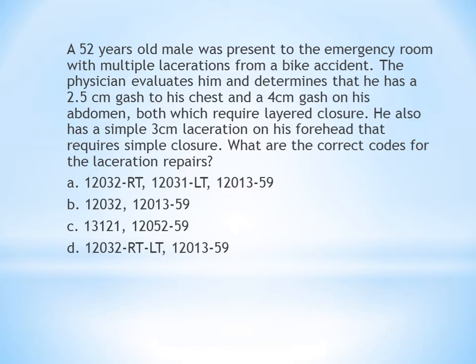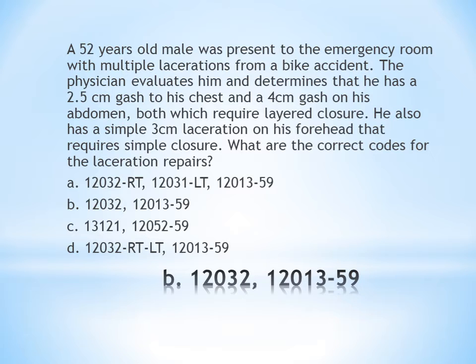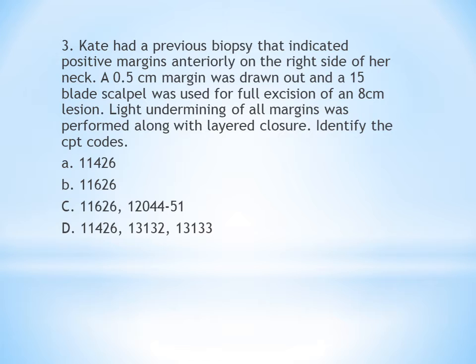Identify the body group and you will get the codes 12013 for simple repair and 12032 for intermediate repair. You have to put the more complicated one first — that is the intermediate repair. Since two different repairs are performed, you add modifier 59 as they are two distinct procedures. The answer is B. You can also eliminate options A and D because they reference right and left procedures (not applicable here), and eliminate C because it includes a complex repair code, which is not the case.